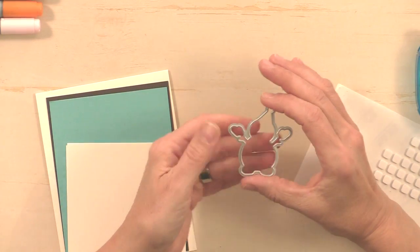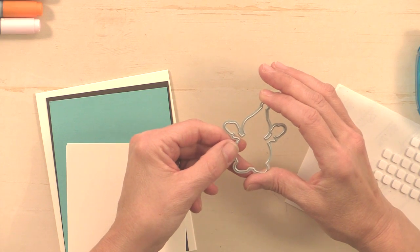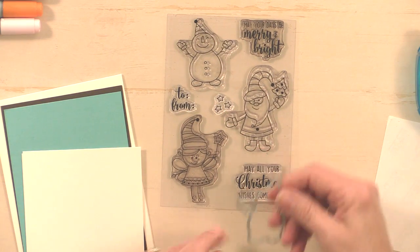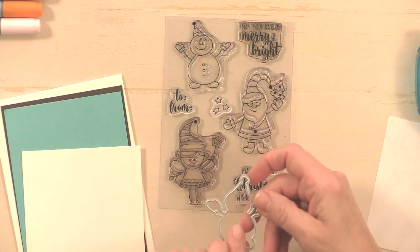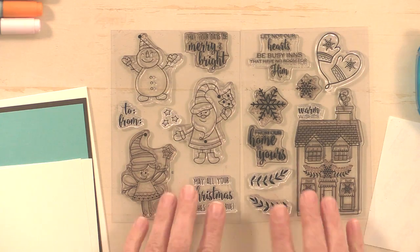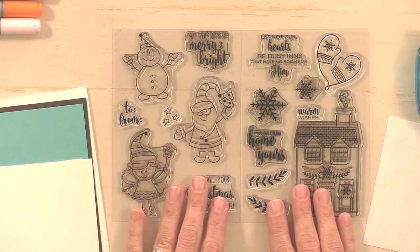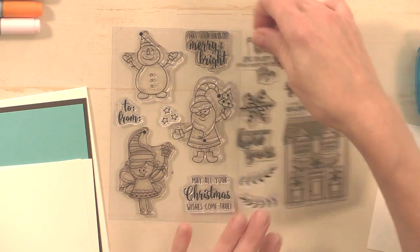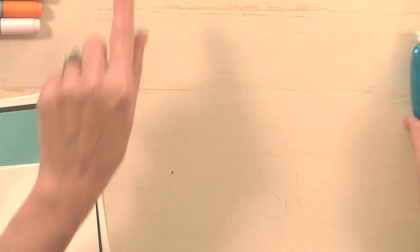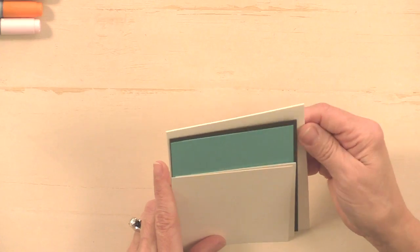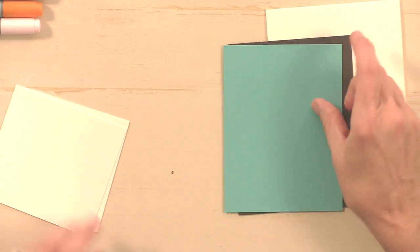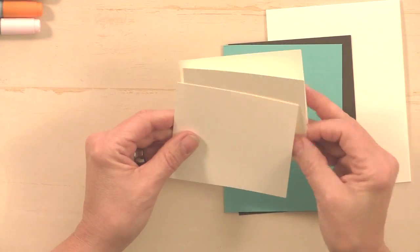I'm also going to use one of the Gina K Designs dies that coordinates with the Christmas Magic set, so I'm going to be cutting out the Little Snowman. I'm also going to use the Christmas Magic set and the Home for the Holidays set. Both of these stamp sets and the dies come in the Home for the Holidays stamp TV kit. Then I'm going to be using some foam squares, adhesive, and for card stock I have heavy base weight ivory for my card base, some charcoal brown, turquoise sea, and a few pieces of layering ivory.